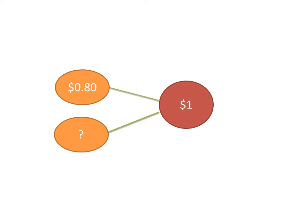We have 1 dollar and 0.80 dollars. We need to find the difference of 1 dollar and 0.80 dollars. Let's look at how to solve this number bond. We know 1 dollar is 100 cents, so first we write 100 cents.